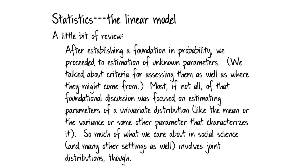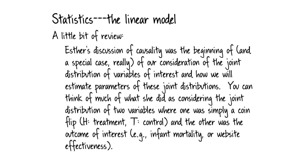But so much of what we care about in social science and in lots of other settings involves joint distributions. So we really have to be concerned with how to estimate parameters characterizing either joint distributions or conditional distributions. Esther's discussion of causality was really the beginning of this — and we could think of it as a special case. Much of what she did considered the joint distribution of two variables where one was simply a coin flip.